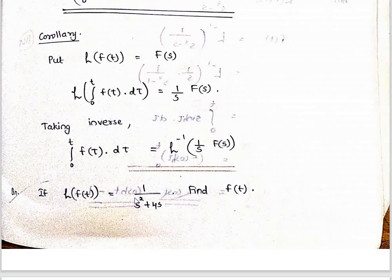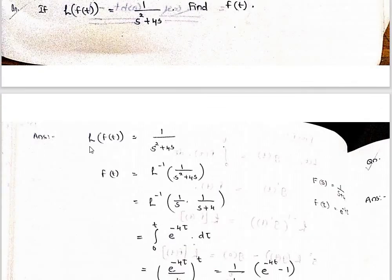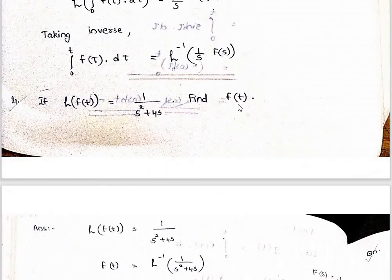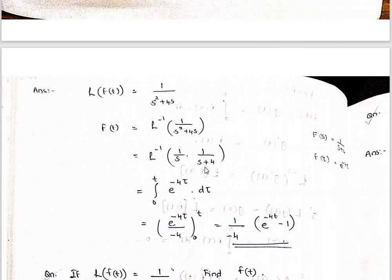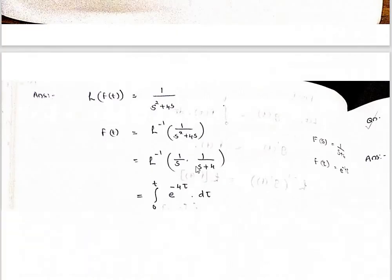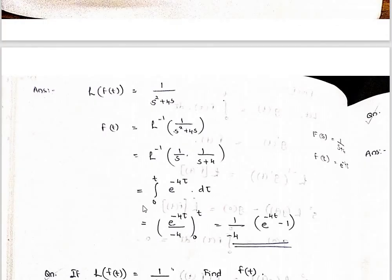Example: L of f of t equals 1 divided by s squared plus 4. Find f of t. f of t is the inverse of this, so write 1 by s times (1 over s plus 4). Using the integral theorem, the answer is the integral from 0 to t of e raised to minus 4τ dτ. Integrate to get the final answer.